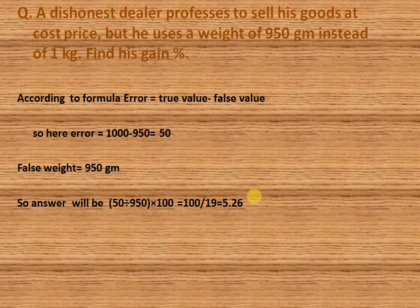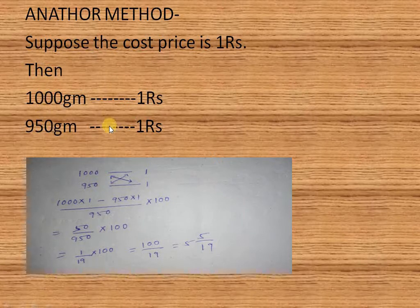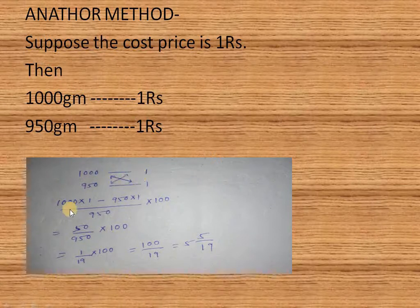If you are not a formula person, you can think of it this way: the shopkeeper bought 1000 grams for 1 rupee and sells 950 grams instead of 1000 grams for 1 rupee. So the shopkeeper purchases 1000 grams for 1 rupee but sells 950 grams for 1 rupee.